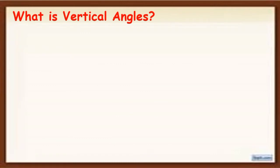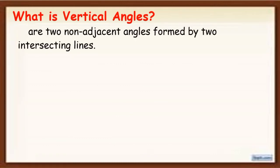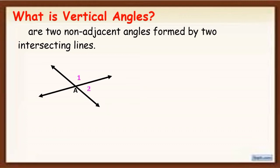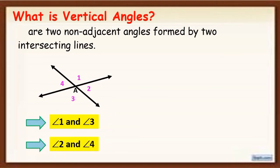So what are vertical angles? Vertical angles are two non-adjacent angles formed by two intersecting lines. For example, we have lines that intersect at point A and I'm going to name each angle as angle 1, 2, 3, and 4. In this figure, angle 1 and angle 3, and angle 2 and angle 4 are examples of vertical angles.